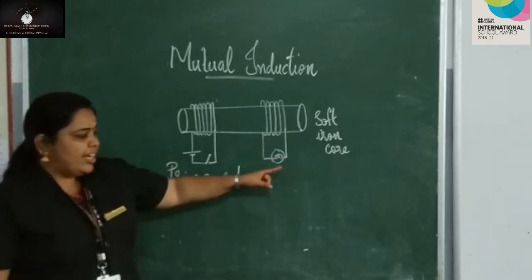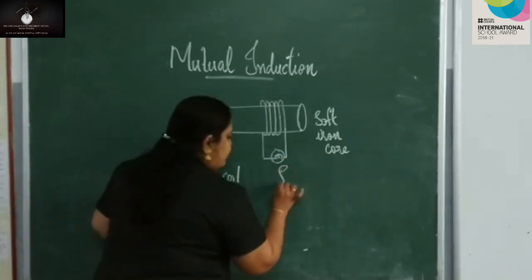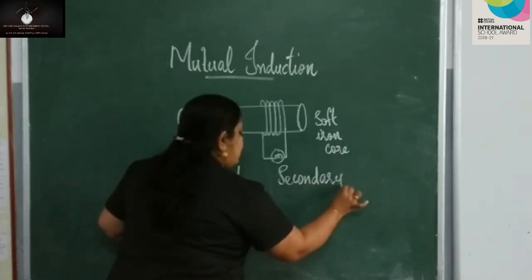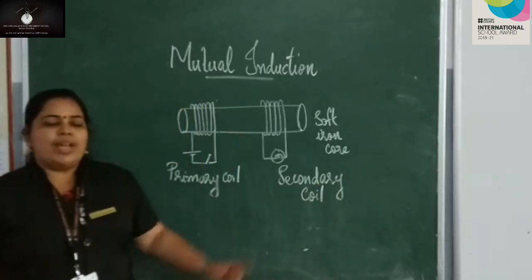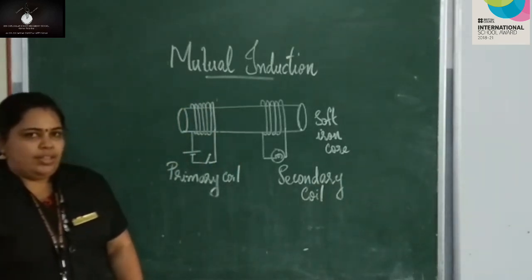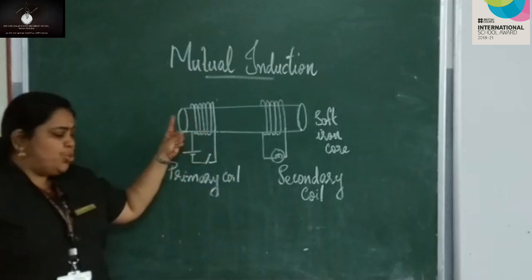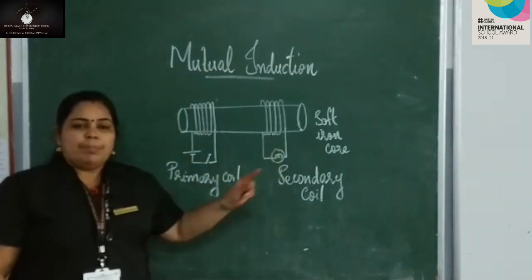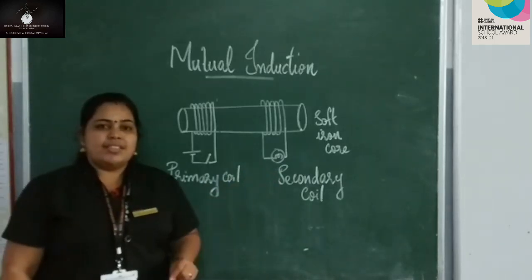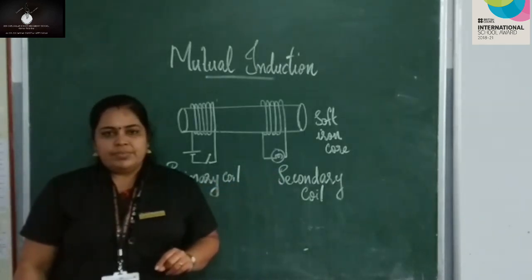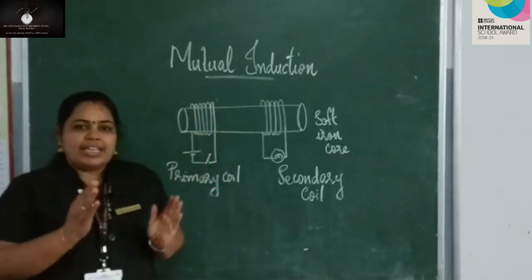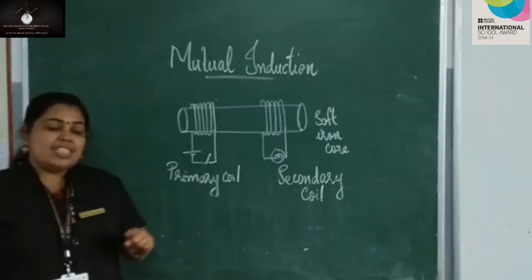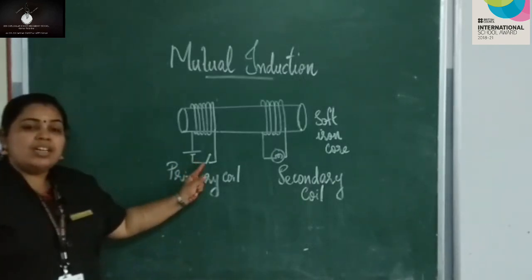The coil to which you have connected the bulb is known as the secondary coil. These two coils are kept nearby. So my question is: what happens when you turn the switch on?